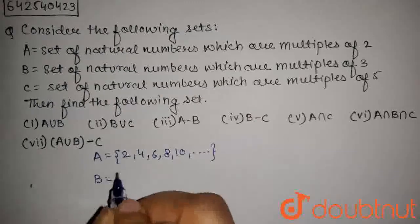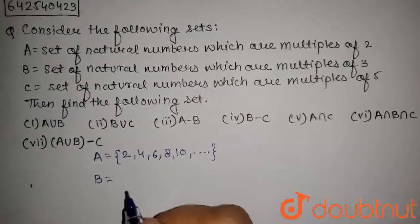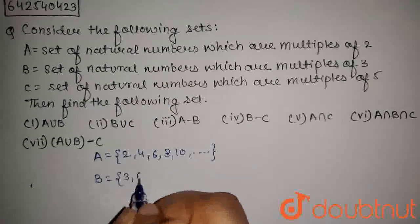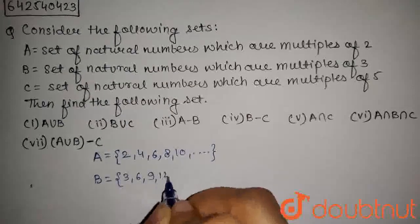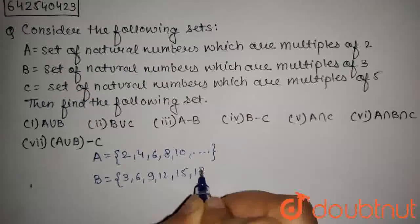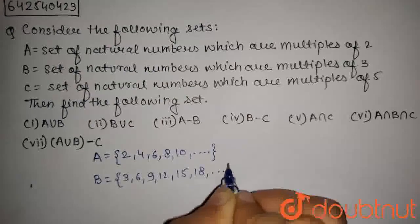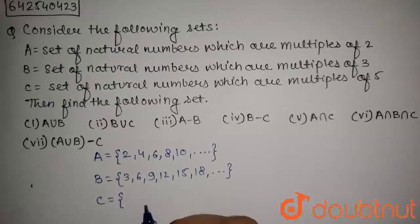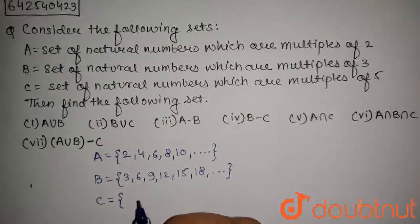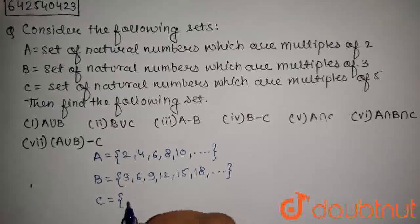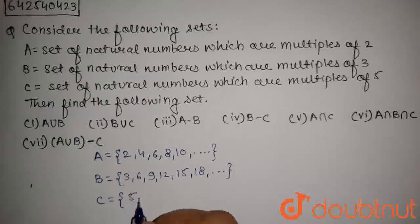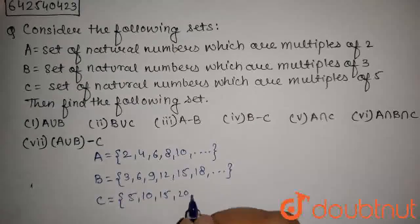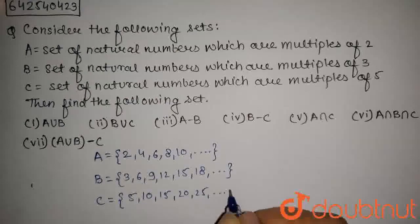B equals the set of natural numbers which are multiples of 3, so it will contain elements 3, 6, 9, 12, 15, 18, and so on. C equals the set of natural numbers which are multiples of 5, so set C will contain elements 5, 10, 15, 20, 25, and so on.